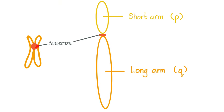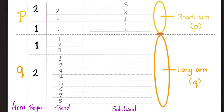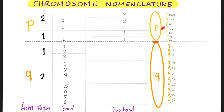Let me show you how we name a chromosome. A chromatid has a short arm (P, from French 'petit') and a long arm (Q), with a centromere in the middle. Each arm is divided into regions, and each region is divided into bands, which are further subdivided into subbands. For example, P2, region 2, band 3 would be written as P2.2.3. It's that easy.